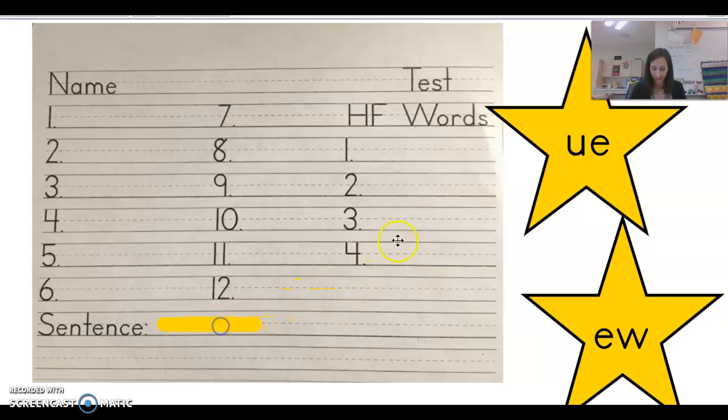Alright, we are on to the sentence. And this one is a little bit shorter for us this week. So I think that will be nice. I'll go ahead and say it twice. Repeat it with me on the third time. And then go ahead and write. And then I'll just say it one or two more times after that. Alright. The sentence for today is he drew a blue clue. He drew. He drew a blue clue. And if you want to repeat it with me. He drew a blue clue. Go ahead and write.